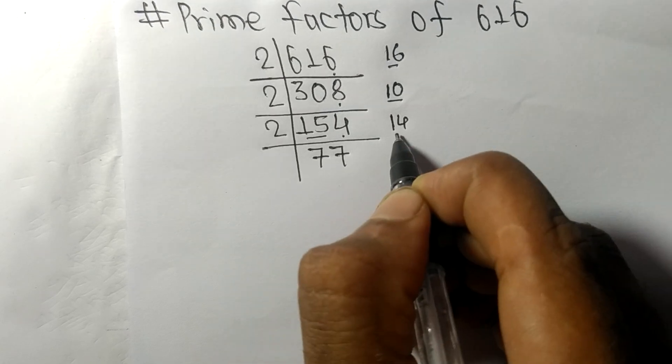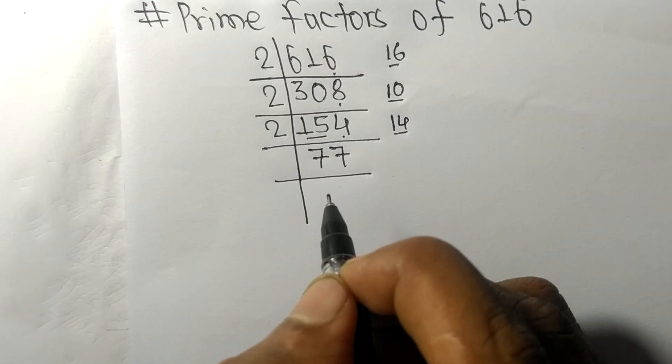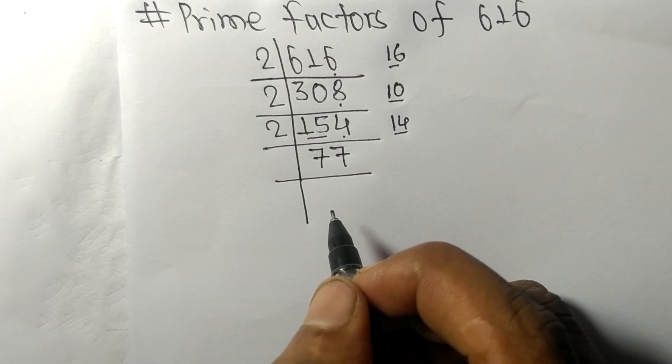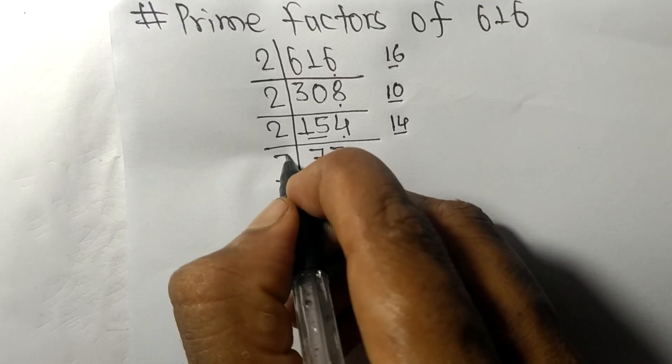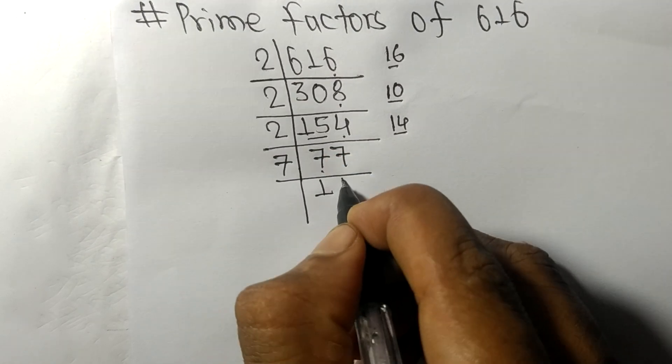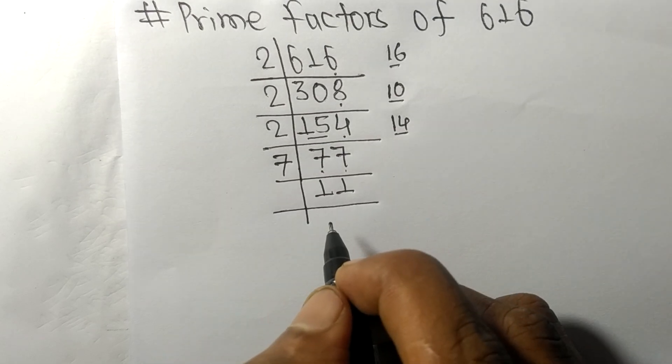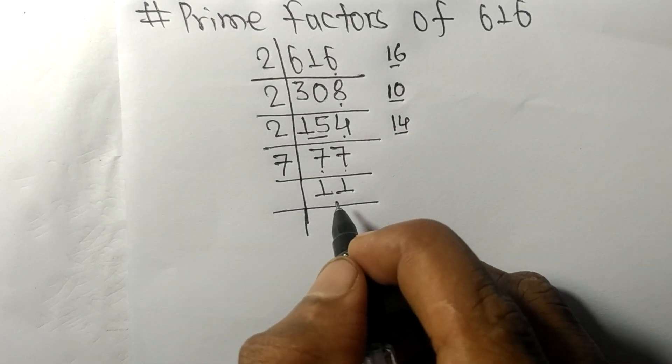So now we got here seventy-seven which is exactly divisible by seven. Seven times one means seven, seven times one means seven. Now we got here eleven which is divisible by eleven and we get here one.